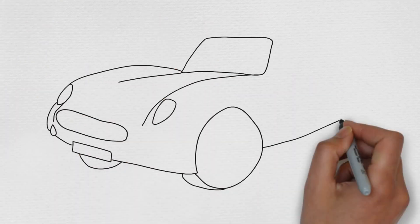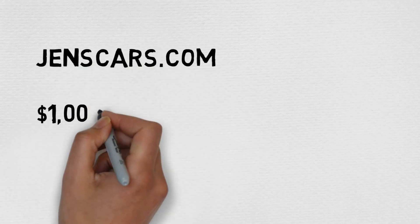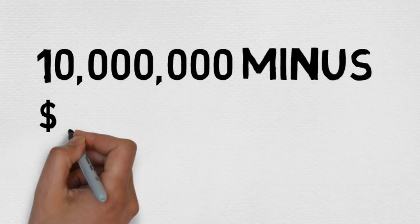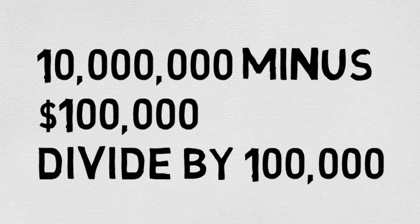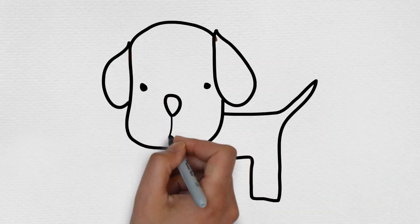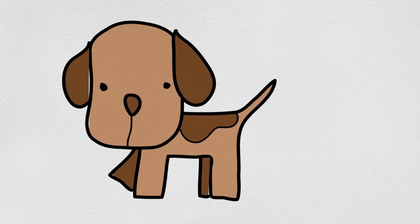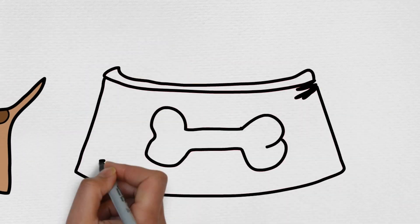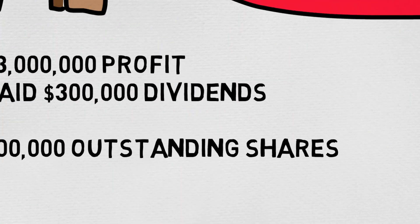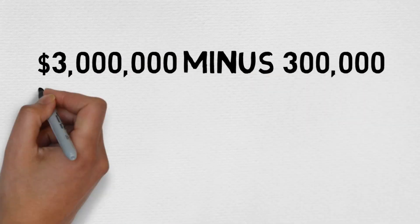Now let's go to fredfood.com. They have $3 million in profit, they paid $300,000 in dividends, and have 200,000 outstanding shares. You simply do the math: $3 million minus $300,000 in dividends, divided by 200,000 outstanding shares — that gives you a total of $13.50 EPS.